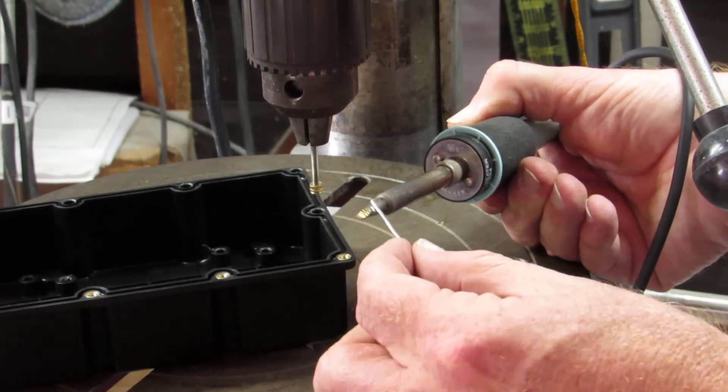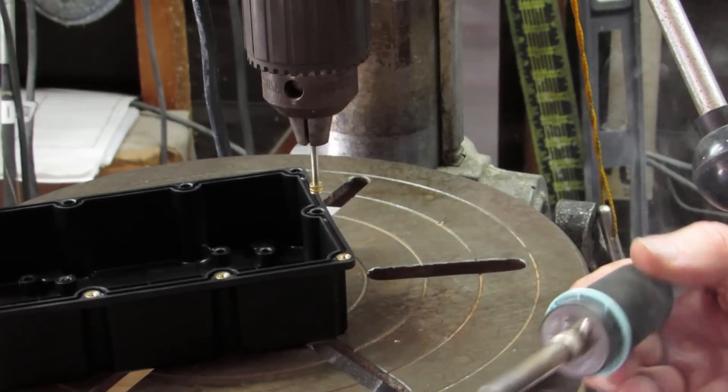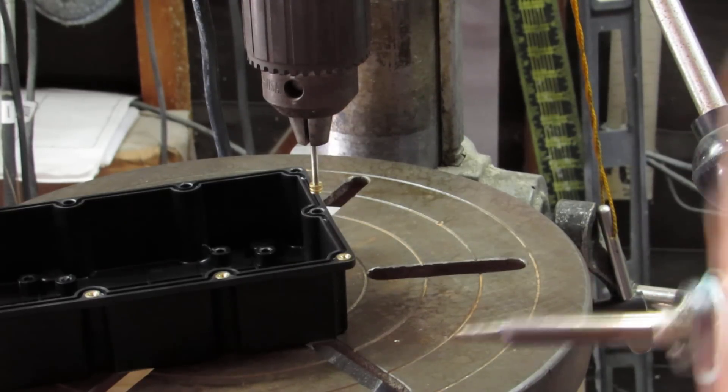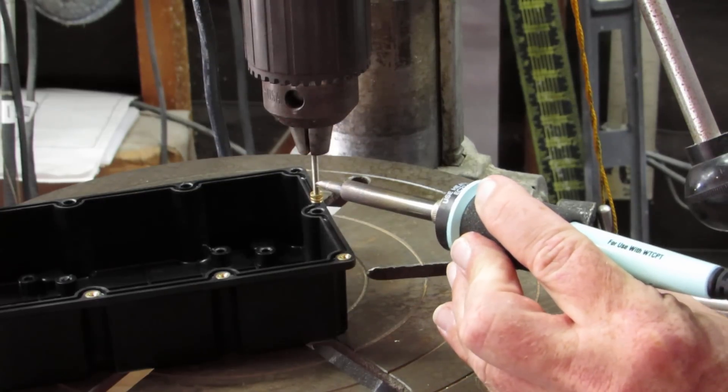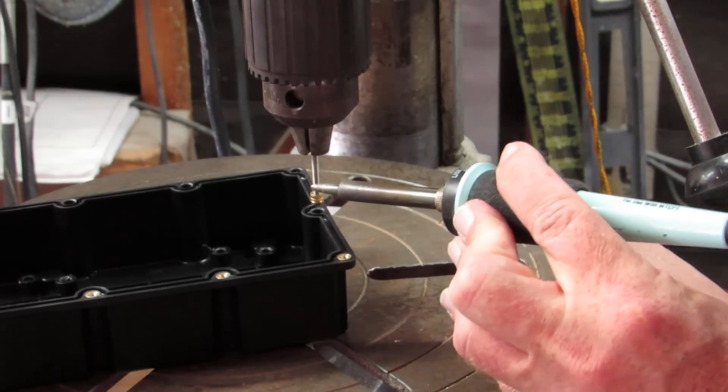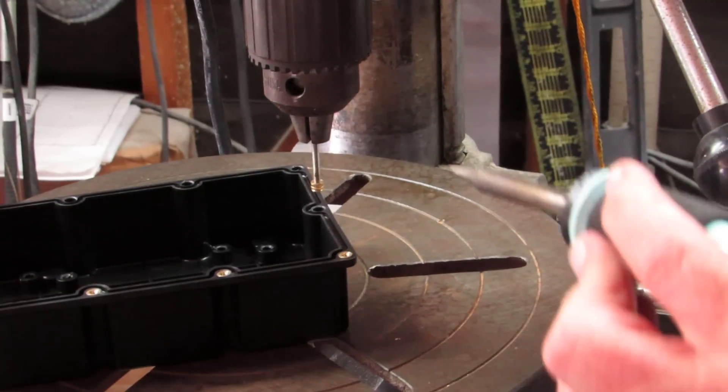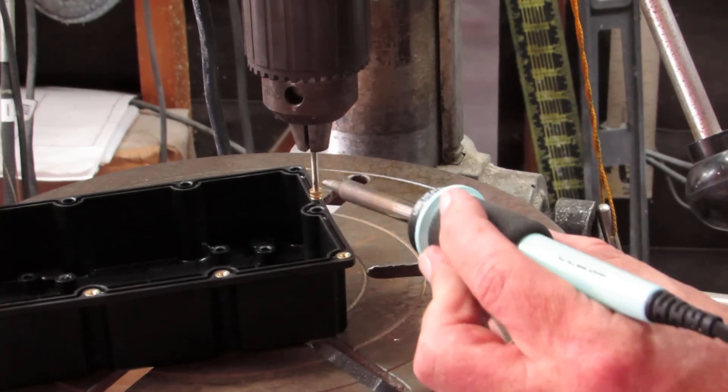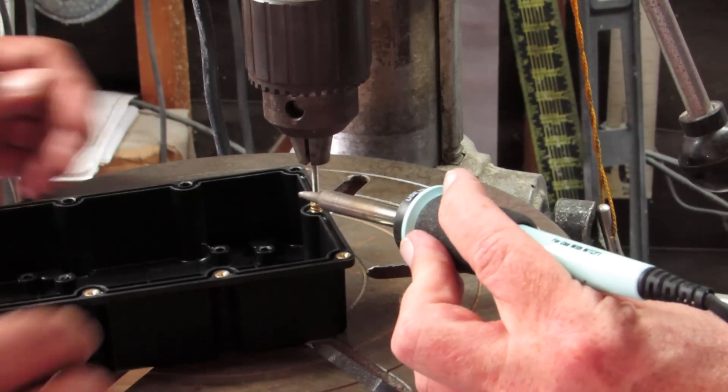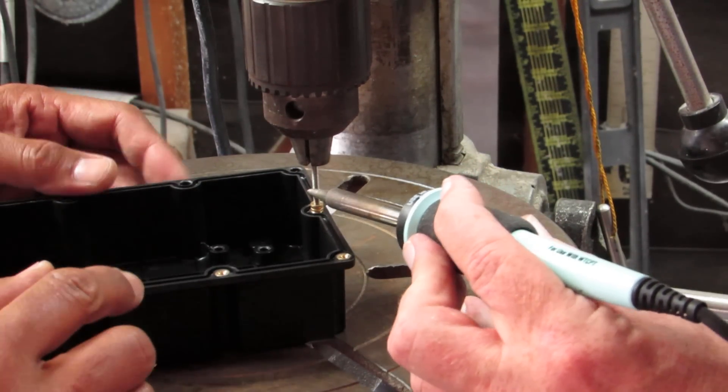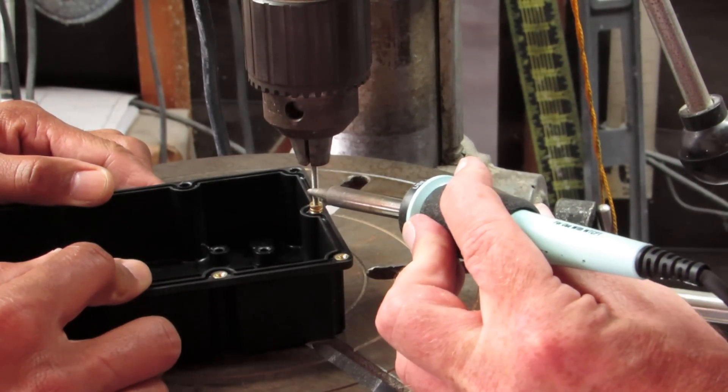Soldering iron. We're going to put a little bit of solder on here so that the heat will transfer more better to the all thread. All right, do that. Get it lined up with the hole. And we'll just start applying pressure.